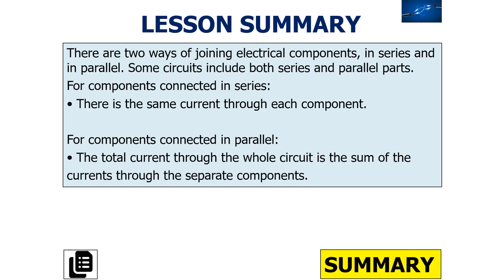To summarise today's lesson: there are two ways of joining electrical components, in series and in parallel, and some circuits include both. For components connected in series, there is the same current through each component. For components connected in parallel, the total current through the whole circuit is the sum of the currents through the separate components.